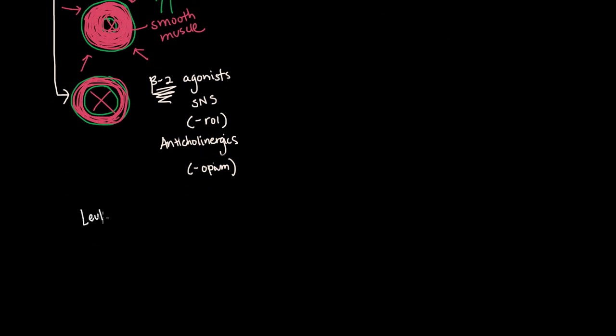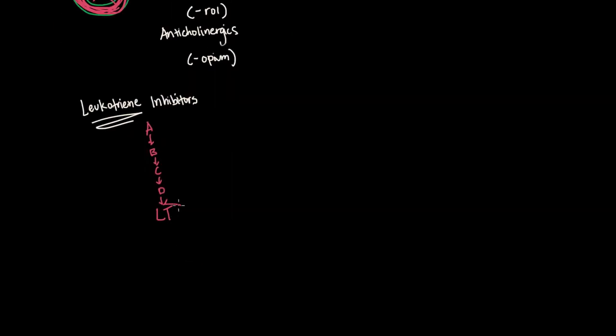The next class I want to talk about are the leukotriene inhibitors. Now leukotriene is an important player in the cascade that leads to inflammation. So for example, in the cascade, if we have A leading to B leading to C leading to D and so on, eventually it leads to leukotrienes, which here I'll just write LT for leukotriene. So this is the goal of the inflammation cascade. We want to get here to cause inflammation, which includes restricting the airway and other things.